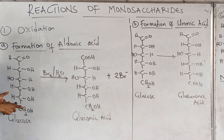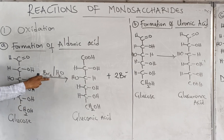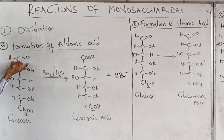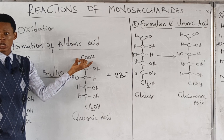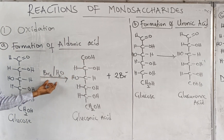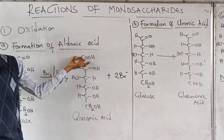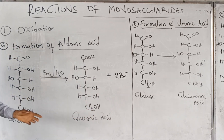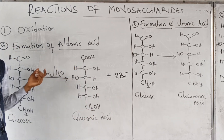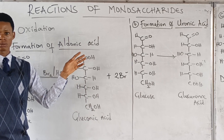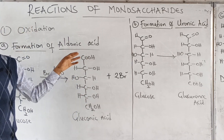If you have a monosaccharide like glucose in the presence of a weak oxidizing agent, only the aldehyde group will be oxidized. If an aldehyde group is oxidized, you get a carboxylic acid. So only this anomeric carbon is oxidized — the aldehyde functional group is oxidized to a carboxylic acid, and all other parts remain the same. What is formed is an aldonic acid. Since we used glucose, this is gluconic acid.